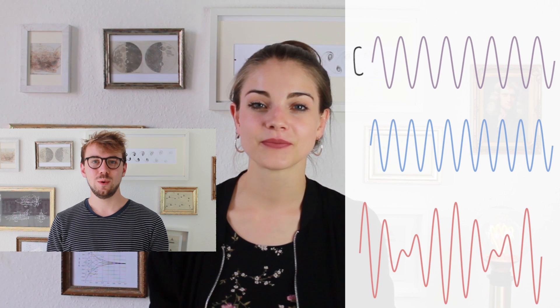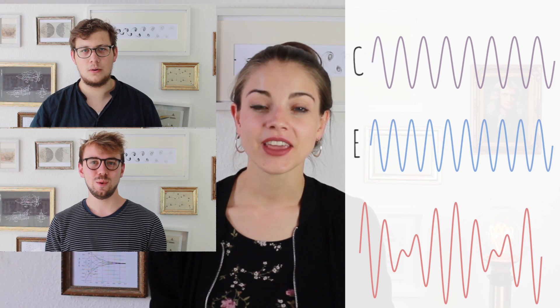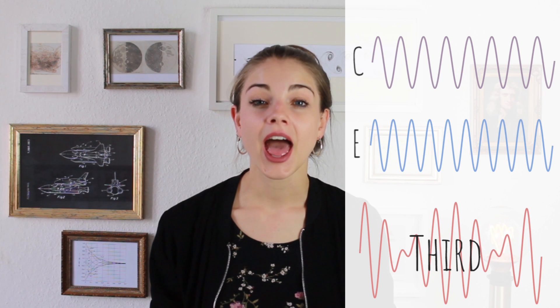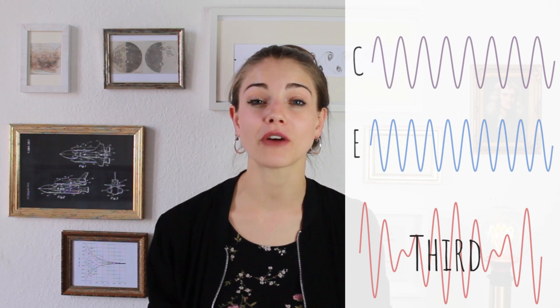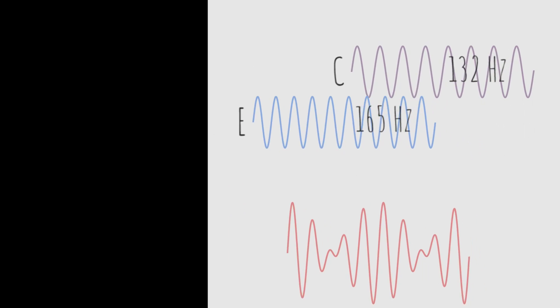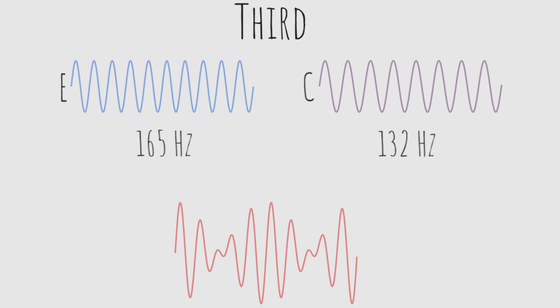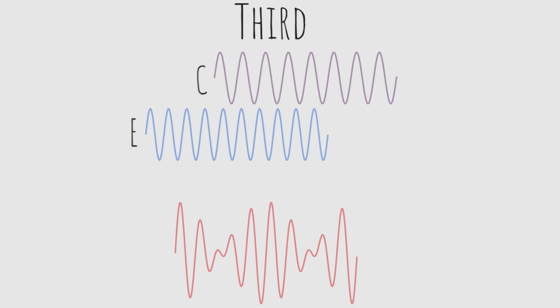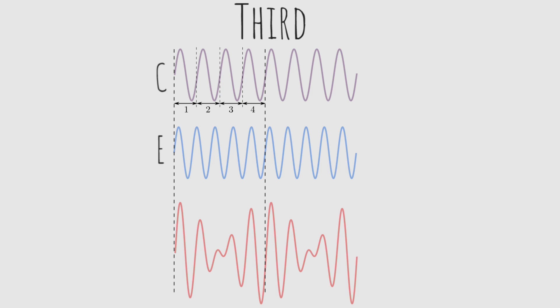Let's look at the example on my left. The two tones are a C and an E — this musical interval is called a third. The acoustic wave corresponding to C has a frequency of 132 hertz, and E has a frequency of 165 hertz. So the frequency of E is the frequency of C times 5/4. That means the superposed wave will repeat every four periods of C or every five periods of E. As you can see, it has a regular pattern, and our ears really like regular stuff — so that is why it sounds so good.